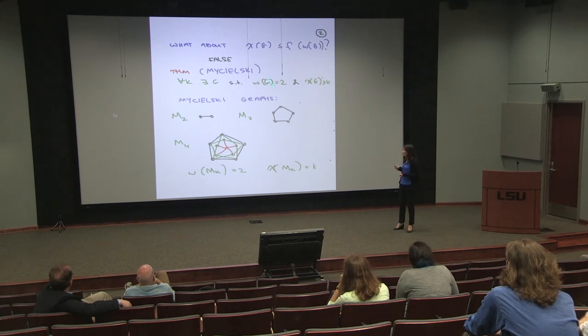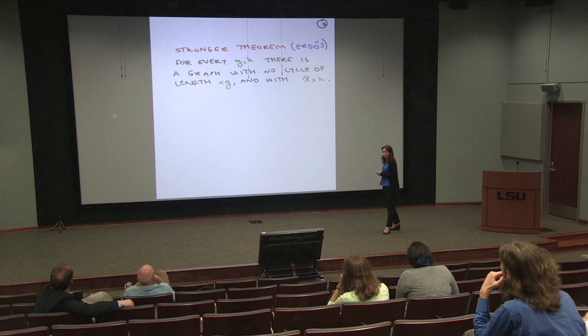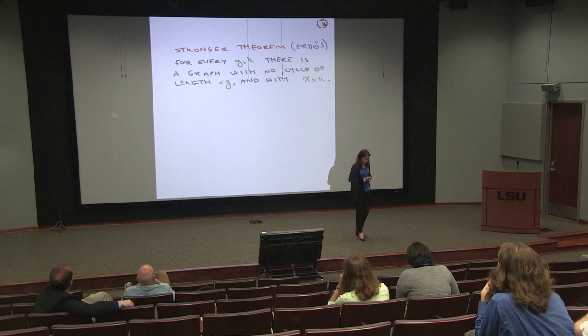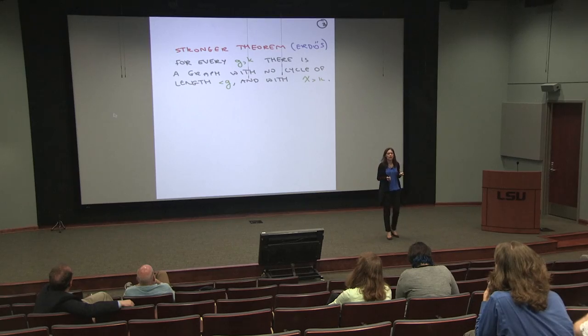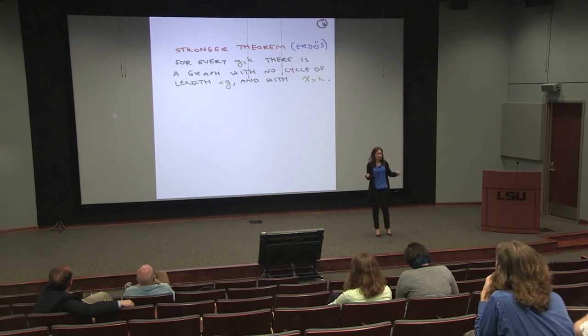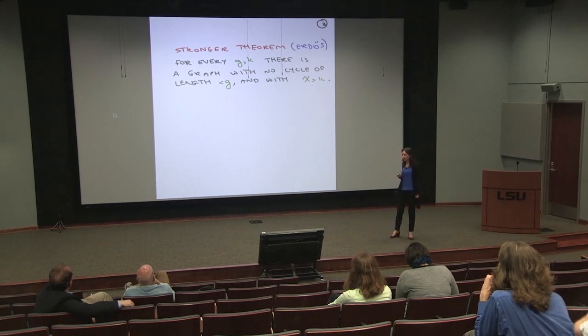For the class of all graphs, there's no function that works. In fact, there's a stronger theorem of Erdős, which I've already mentioned. The Mycielski construction gives a family of graphs with no triangles and arbitrarily large chromatic number. Erdős's theorem gives a family of graphs with no short cycles at all and arbitrarily large chromatic number. The girth of a graph is the length of the shortest cycle. The theorem says that for every g and k, there's a graph with girth at least g and chromatic number at least k — strictly stronger than what Mycielski did. The proof of this is probabilistic.